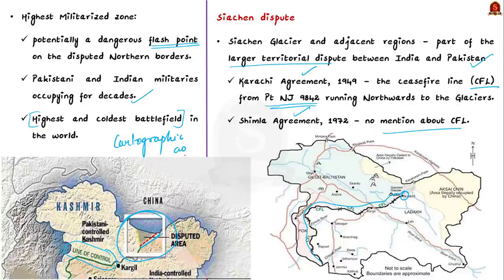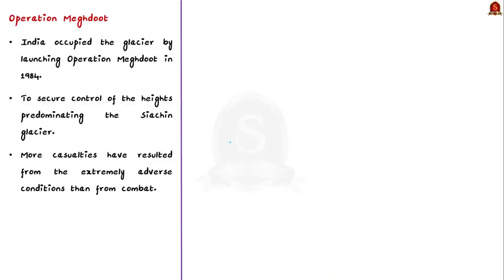India had to counter this, so India occupied the glacier by launching Operation Meghdoot in the year 1984. It was an operation to secure control of the heights predominating the Siachen Glacier. It was launched when the Indian Army and the Indian Air Force went into the glacier. So the glacier region has been occupied by Pakistani and Indian militaries since 1984.